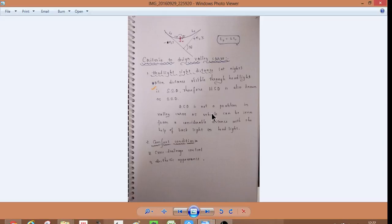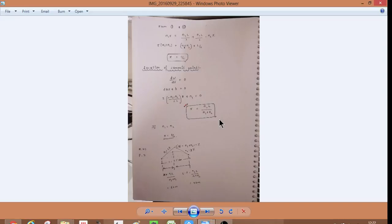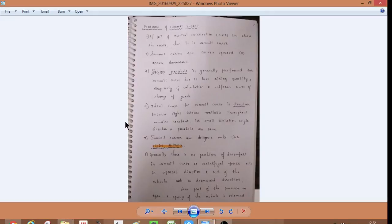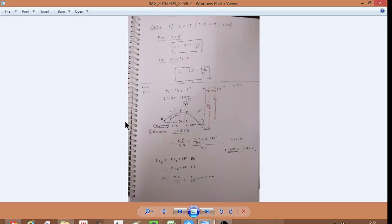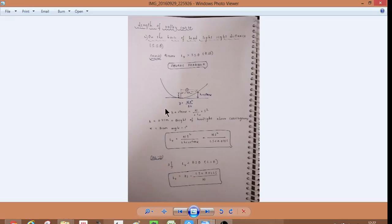OSD is not a problem in valley curve as OSD vehicle can be seen from considerable distance with the help of back light or headlight as it is. So, here is the sight distance. What is the sight distance? Here, here. Sight distance is stopping sight distance. Headlight sight distance. So, here is the sight distance. Next step. This is the same. Lambda value. We need to be L greater than SSD. Now, HSD is the same. HSD is the same. Now, here is N square by 1.5 plus 0.035S. Now, here is L less than SSD. 2S minus 1.5 plus 0.035S by N.